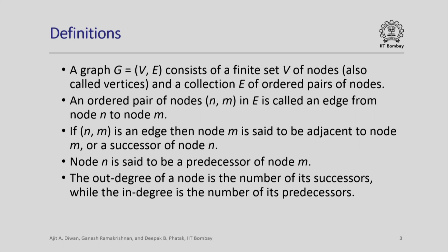Similarly, node n is said to be the predecessor of node m, or the previous node of m. Again, m can have any number of predecessor nodes, and which nodes are predecessors or successors is defined by the set E of edges in the graph. The out-degree of a node is the number of its successors and the in-degree is the number of its predecessors.